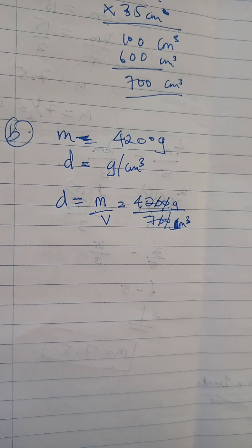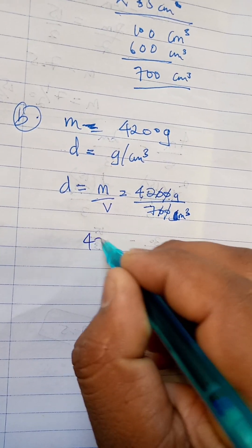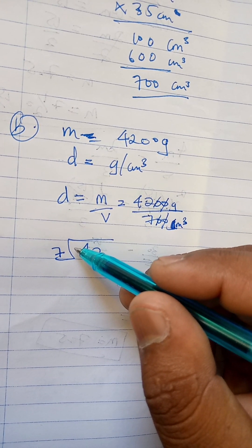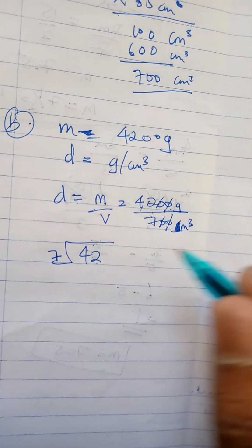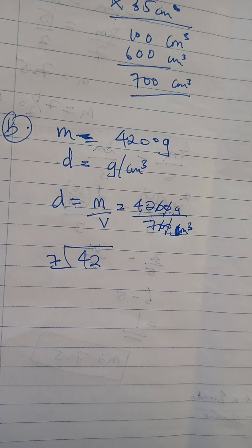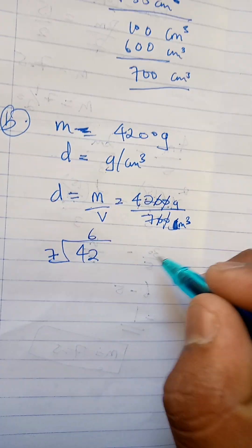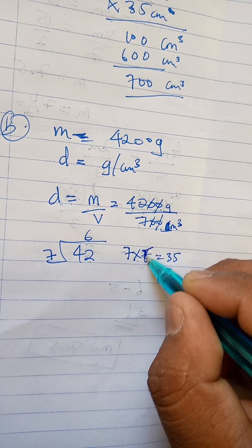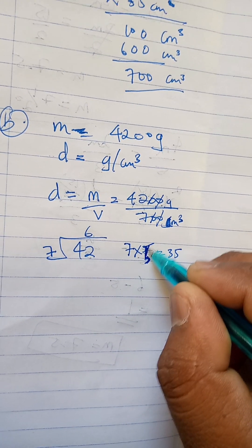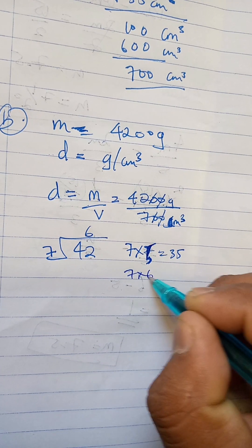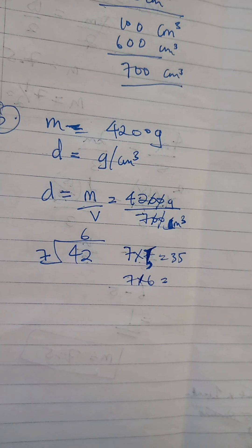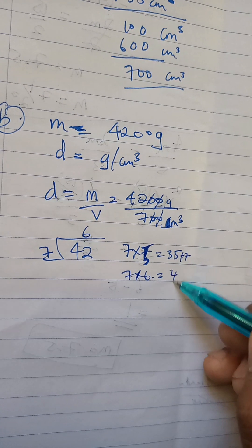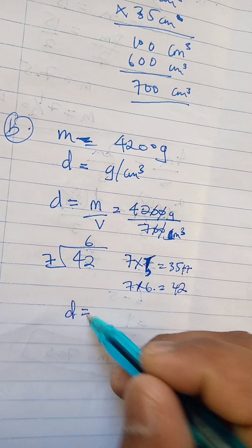So 7 times 6 is 42, because 7 times 5 is 35. In order to know how much 7 times 6 is, we have to add a 7 here, right? So it's gonna be 42. Okay, the density is 6 grams per cubic centimeter.